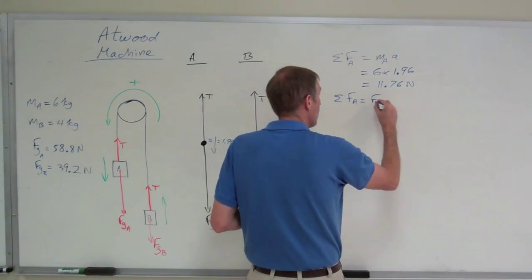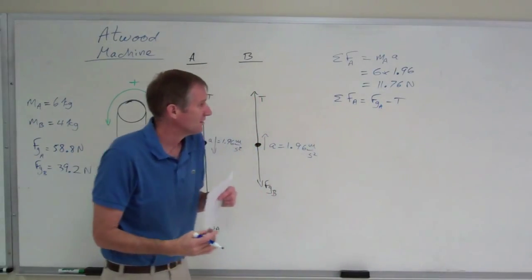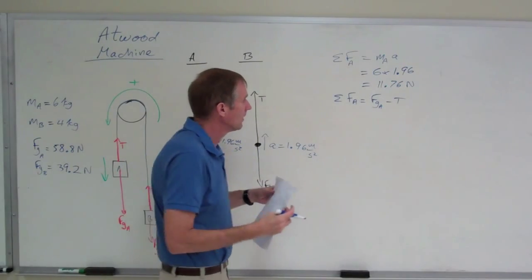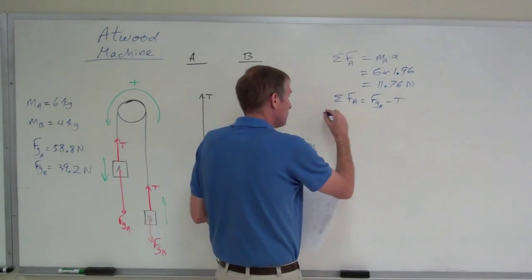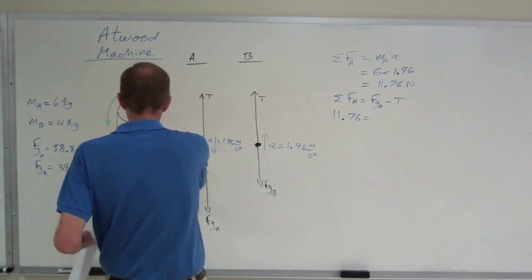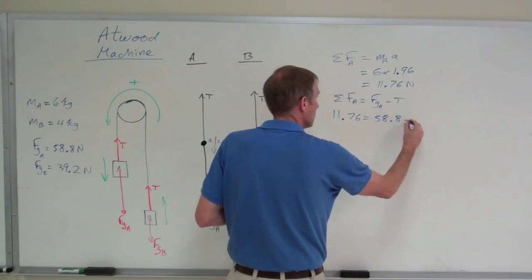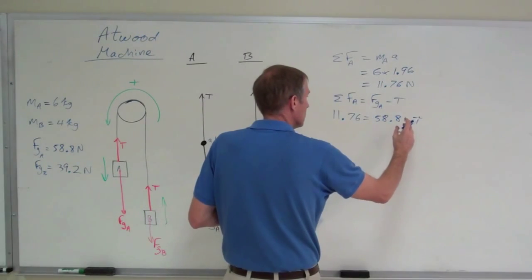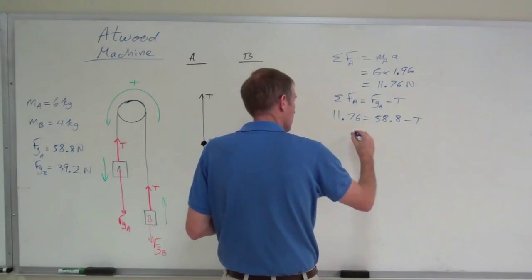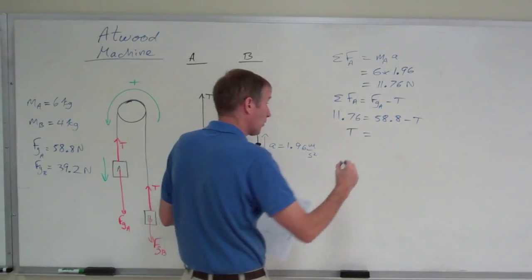So, weight of A minus tension. The direction, or the way you orient these absolutely matters. This is 11, this is positive, 11.76 equals 58.8 for the weight, minus T. Add T to the other side, subtract 11.76 over there, and you get T equal to 47 newtons.